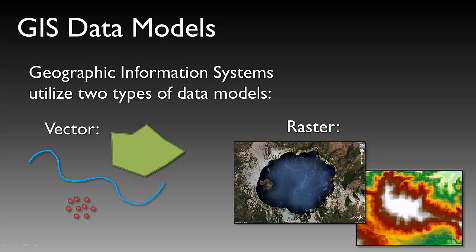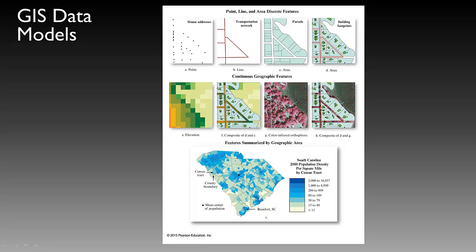You've all seen raster data before. If you use Google Earth or if you've taken a picture with your digital camera, you've seen a raster data set. Data models can represent houses, transportation networks, parcels, and building footprints — those can be vector data sets.